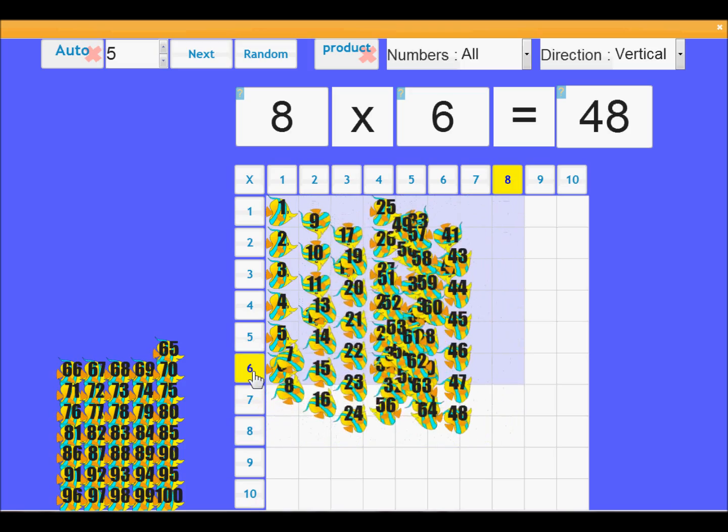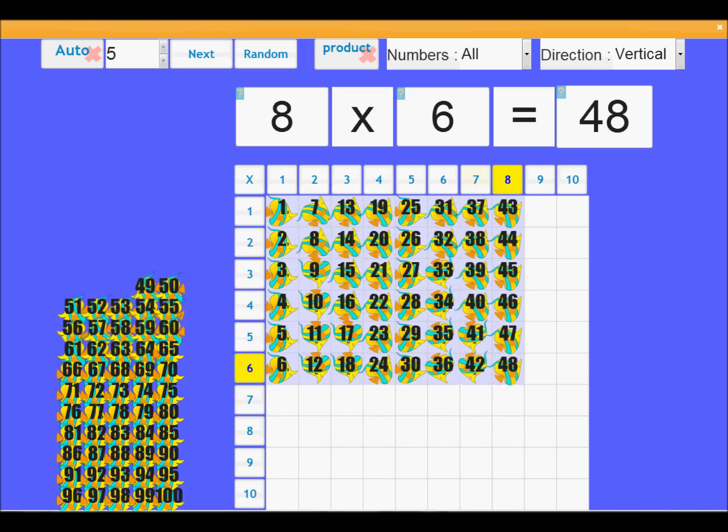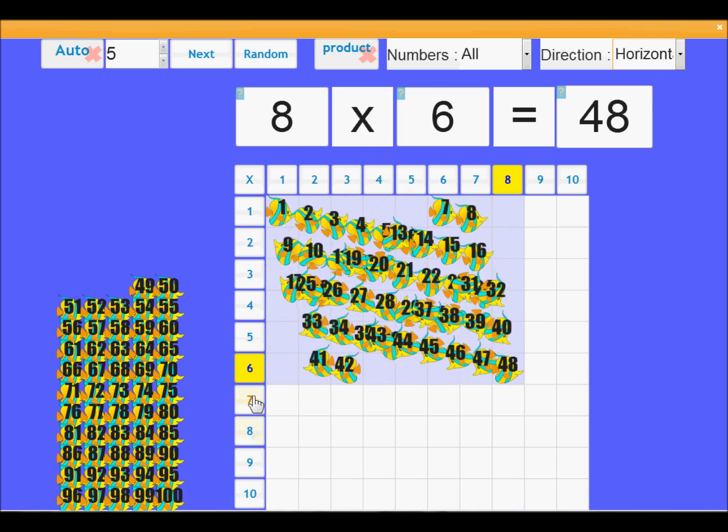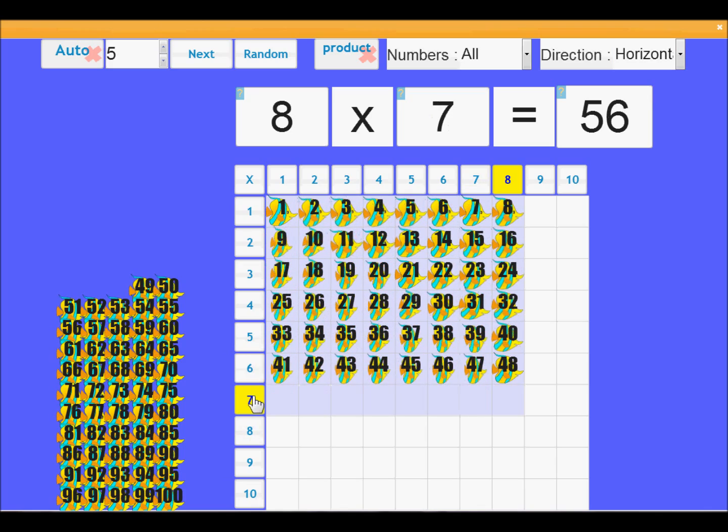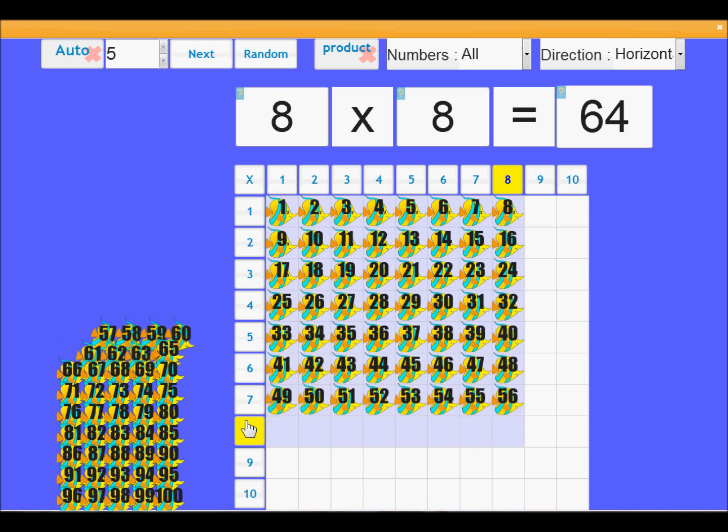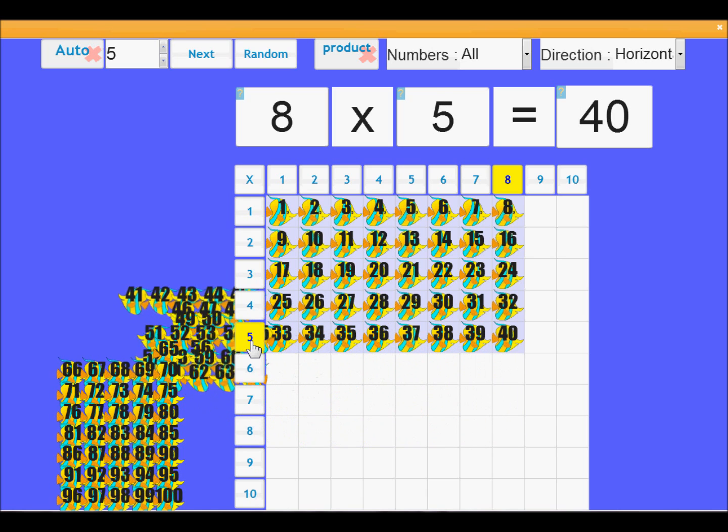So this arrival and leaving behaviour is actually affected by the direction control. So if I change this to horizontal now, you'll see the fish rearrange themselves, and now they are labelled horizontally, which means when I click the numbers below, they're actually coming into the empty spaces in a nice horizontal line.